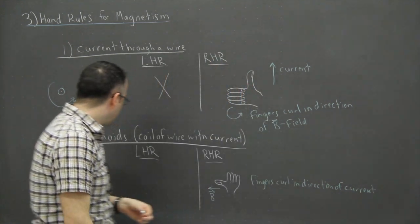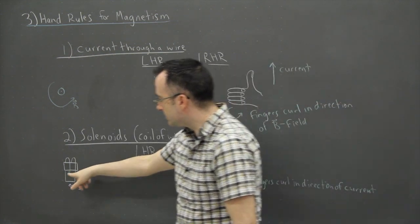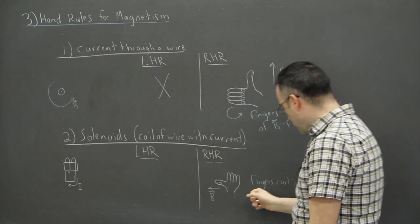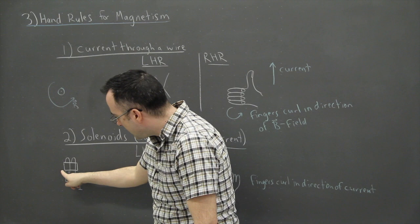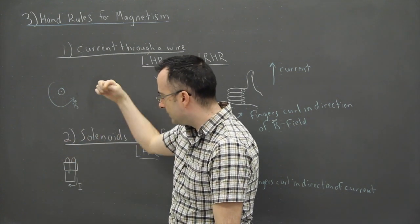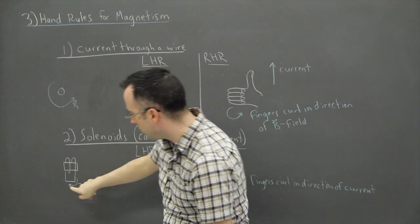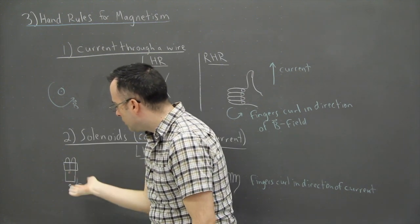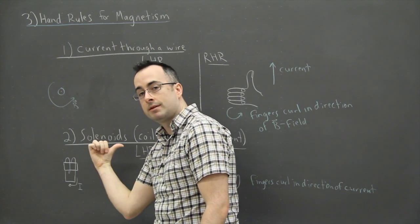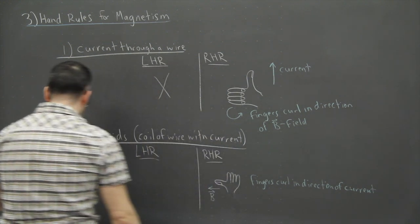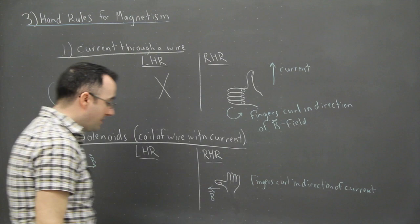To find out, I use the right hand rule for solenoids. I look at how the wire is wrapped: the current goes down this side, behind it, over the top, behind it again, and down. So my fingers curl this way — that's the direction of the current — and my thumb points to the right. That means the magnetic field points to the right.